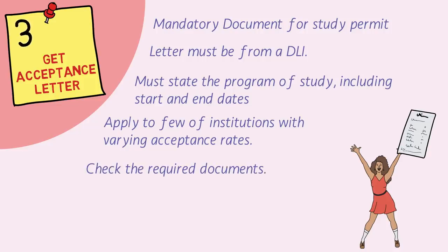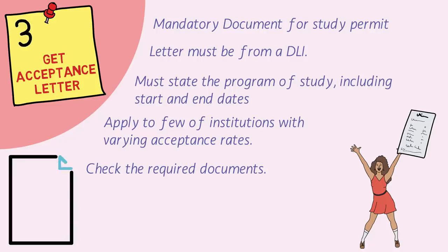The documents required for applying include a completed application form, an essay or writing sample, a statement of purpose, your language proficiency test report, a bank letter stating that funds are available for study, an affidavit of financial support signed by your parents, and a transcript from your college. Getting a transcript is very important — plan for it early as part of your parallel activities. Once you apply and receive an acceptance letter, you can move on to the fourth step.